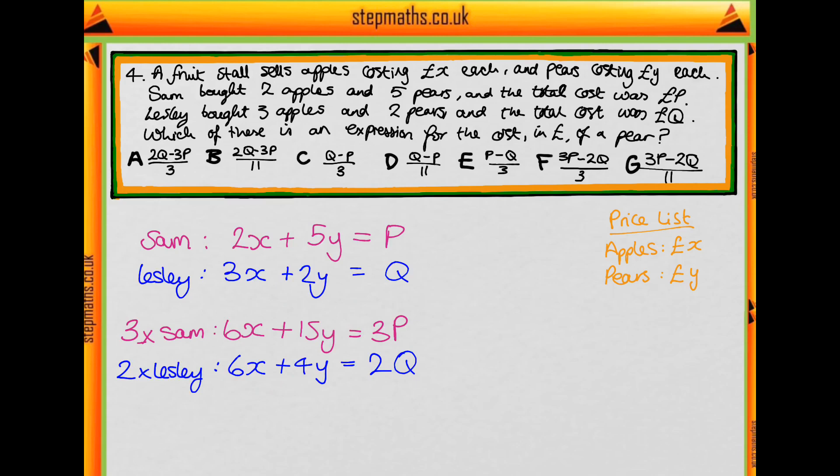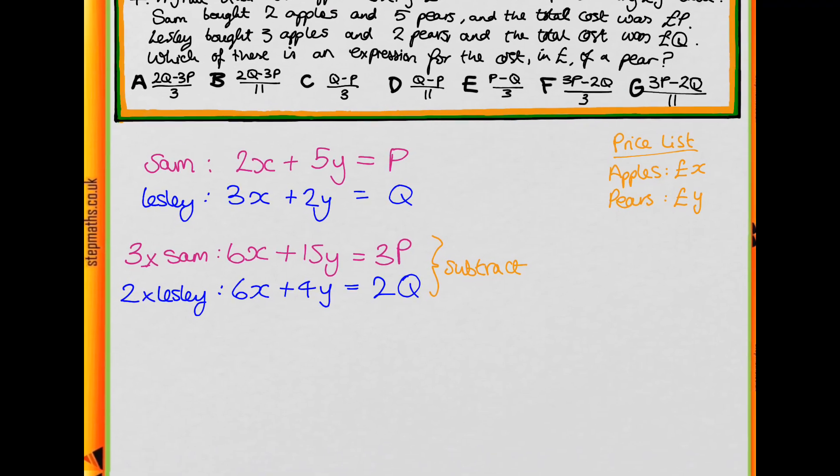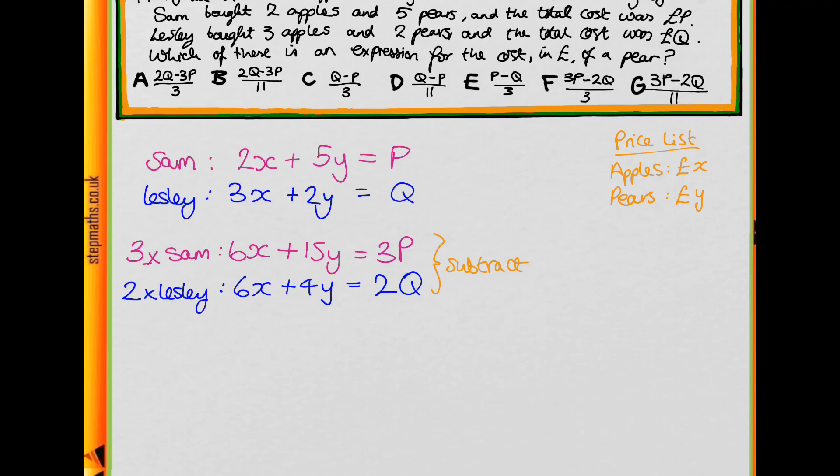So what we're going to do is subtract these equations to get rid of the X. So have a go at doing that now. What you should get is 11Y equals 3P minus 2Q.